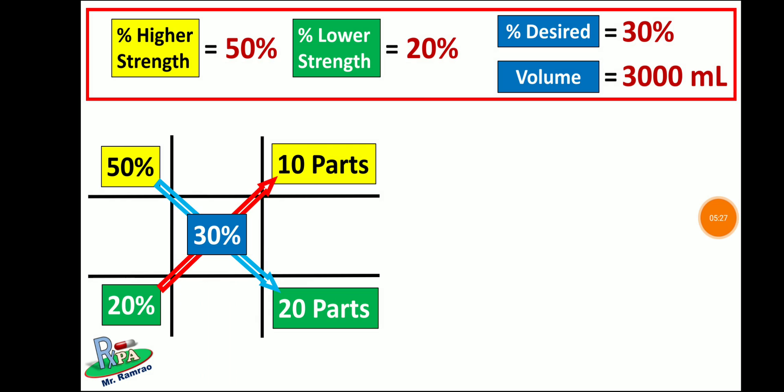This indicates that you have to take 10 parts of 50% and 20 parts of 20% dextrose solution to get 30% dextrose solution. If the question asks for the ratio required, you can say 50% and 20% are required in a 10:20, that is 1:2 ratio.